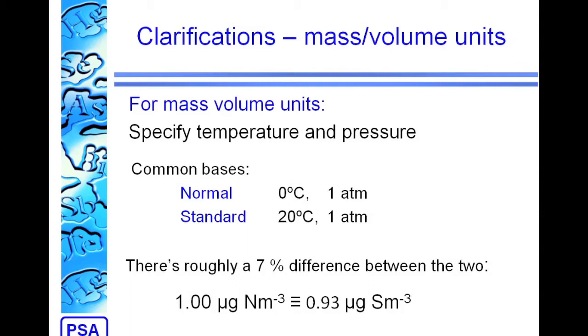There's roughly a 7% difference between these normal and standard conditions. Whilst 7% is not a huge amount when you're specifying a system or setting a system up, it can make a significant difference with the actual results. It can mean the difference between compliance and non-compliance.